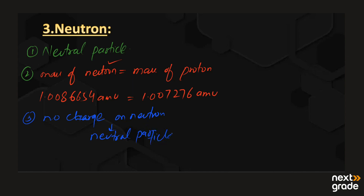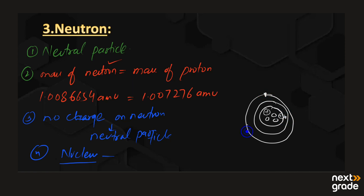Neutrons are neutral subatomic particles present in the nucleus. If we show this diagrammatically, the central part is the nucleus, which contains protons and neutrons. Around the nucleus there are circular orbits containing the electrons. Neutrons are 1842 times heavier as compared to the electrons.